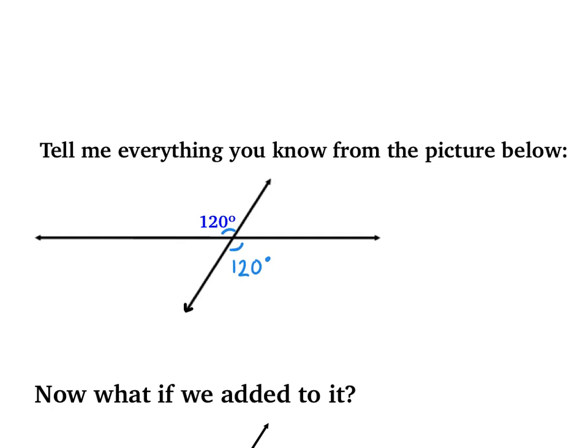To find the others, I need to use supplementary angles. These two together create a straight line, so 120 plus the missing angle has to equal 180 — that tells me the missing angle is 60 degrees. Then I can use vertical angles again to fill in that the angle across from it would also be 60 degrees.